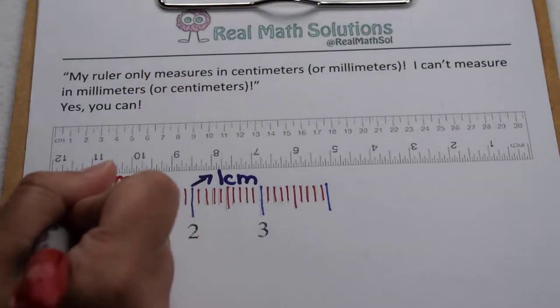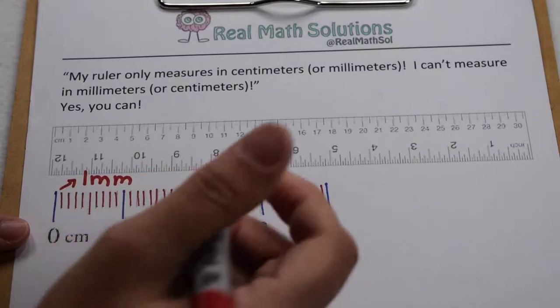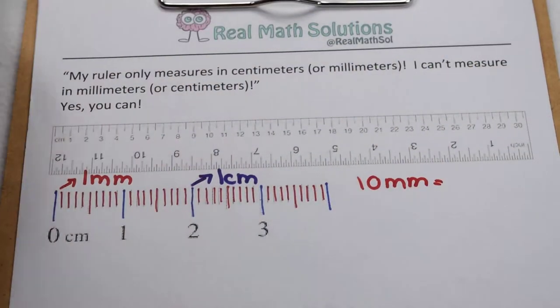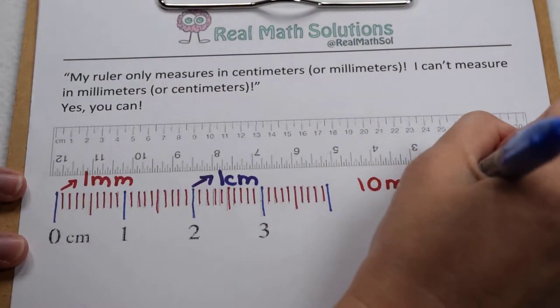It takes 10 millimeters to get up to one centimeter. So 10 millimeters is worth one centimeter.